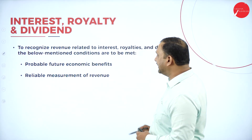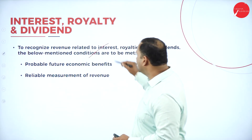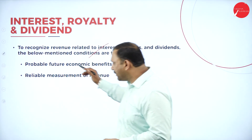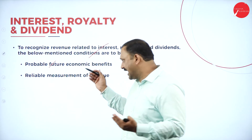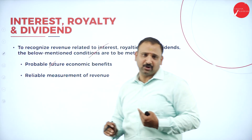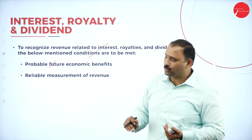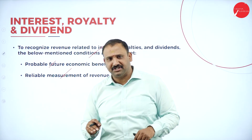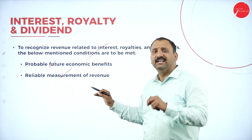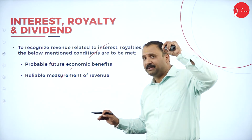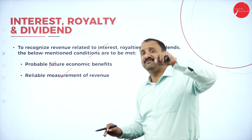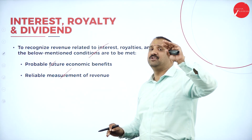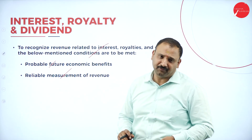Interest, royalties, and dividends: to recognize revenue related to these, we look into the probable economic benefits — measuring what is going to come out of them — followed by reliable measurement. Whenever I stress on the term 'reliable measurement,' I mean that whatever has been measured has been done on a very transparent and ethical basis, so I can trust the revenue factors that are going to come from here.